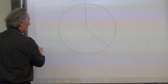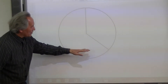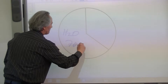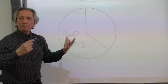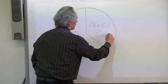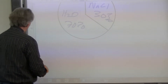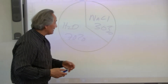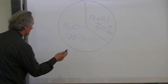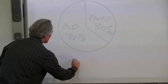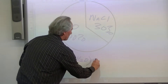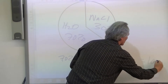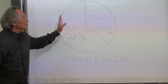But before I begin, let's talk a little bit about this pie chart. The larger section I'm going to represent as H2O, at about 70%. The smaller section I'm going to represent as sodium chloride, at about 30%. How can we interpret this pie chart? One way is by percent: 70% water plus 30% NaCl equals 100%.